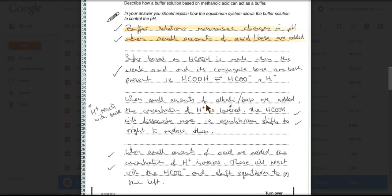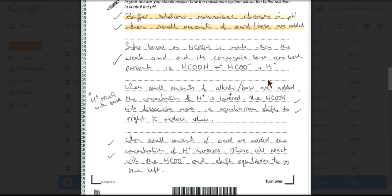So when small amounts of alkali or base are added, that's going to react to the H plus concentration, it's going to drop the H plus concentration, and so the buffer responds by this weak acid, methanoic acid, dissociating a little bit more to send some H plus ions back. So I've written that. When small amounts of base are added, the concentration of H plus is lowered. That means that the HCOH will dissociate more and the equilibrium shifts to the right to replace them.